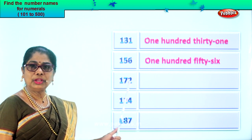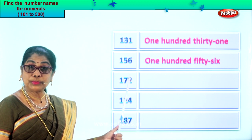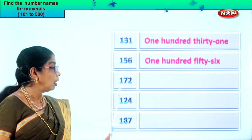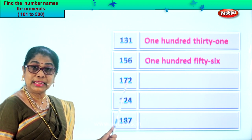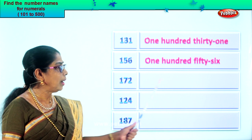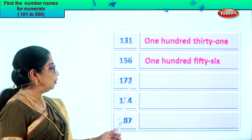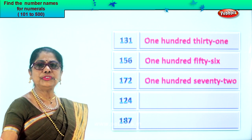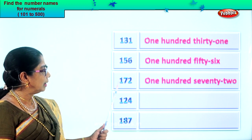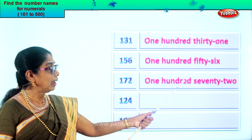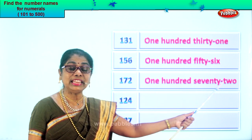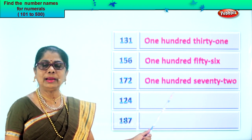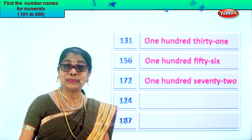Let's take the next numeral. Read aloud: you have ones place two, tens place seven, and in the hundreds place one. Read: one hundred seventy-two. So you write one hundred first, then you write seventy-two — seventy hyphen two. The spelling of seventy should be correct. One hundred seventy-two.